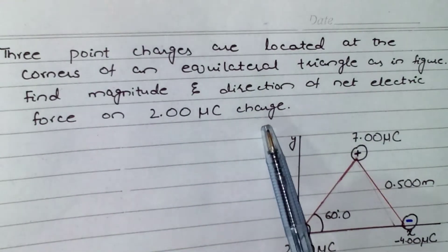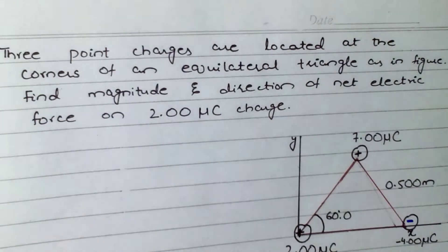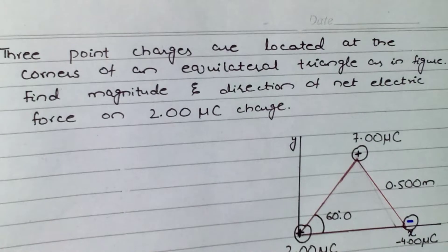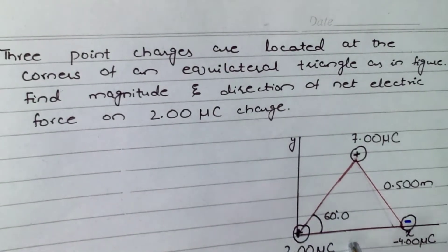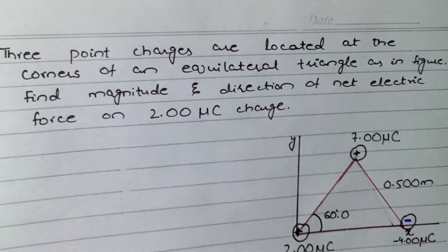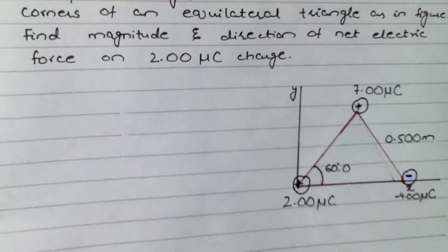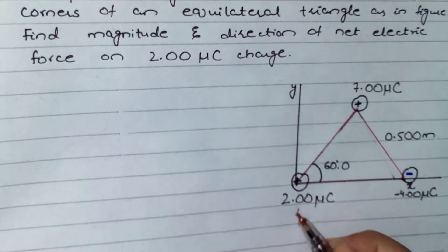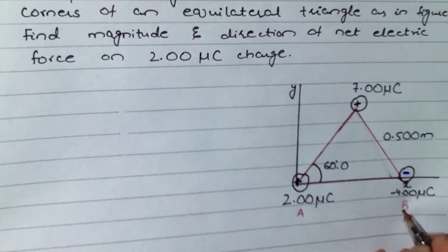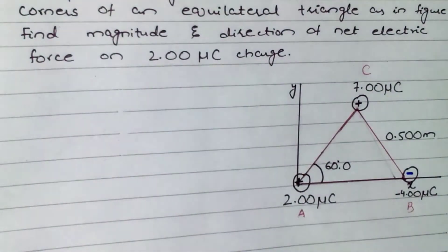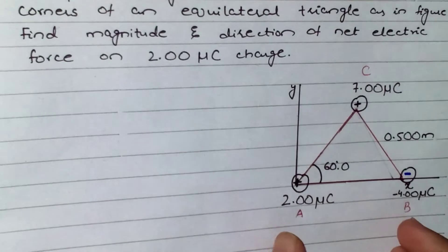We are asked to find the magnitude and direction of the net electric force on the two micro coulomb charge. In this question we have an equilateral triangle, meaning all three angles and three sides are equal. Let's start solving — our first task is to name all the charges. Let's call them A, B, and C.